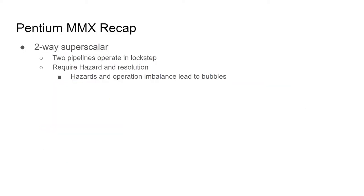First, a recap of the Pentium MMX. The Pentium MMX is a two-way superscalar pipeline processor. This means that it has two execution pipelines that both operate in lockstep. As a result, the two pipelines must have hazard checking and resolution, or any hazard or operation imbalance will lead to pipeline bubbles.